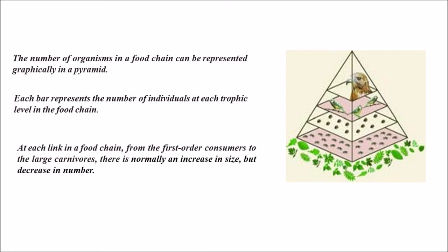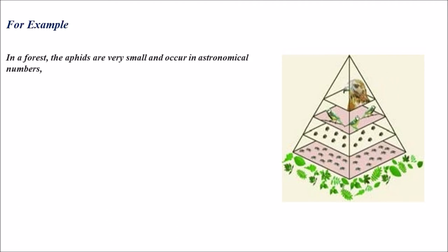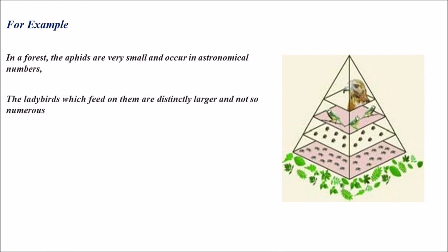At each link in a food chain, from the first order consumers to the large carnivores, there is normally an increase in size but a decrease in number. For example, taking a forest: aphids are very small and occur in astronomical numbers. The ladybirds which feed on them are distinctly larger but not so numerous — less in number when compared to the aphids.